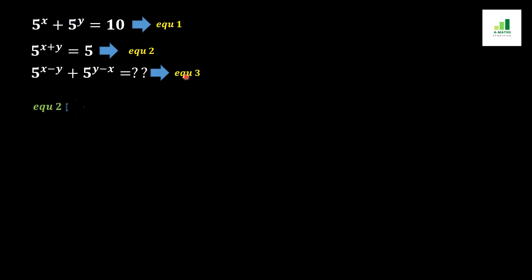To solve this, we first take equation number 2: 5 to the power (x plus y) equals 5. This can be rewritten by splitting the combined exponent as 5 to the power x multiplied by 5 to the power y equals 5, since we can write each power individually with its own base of 5.